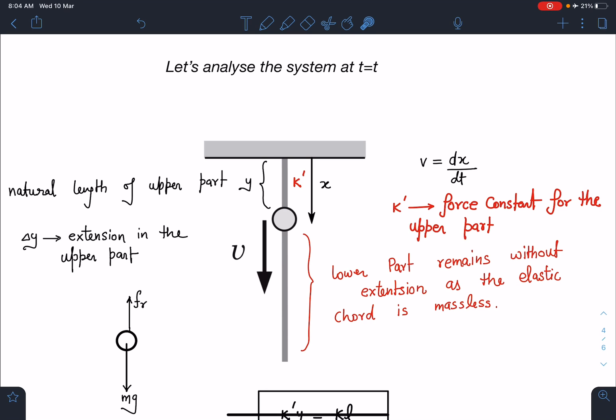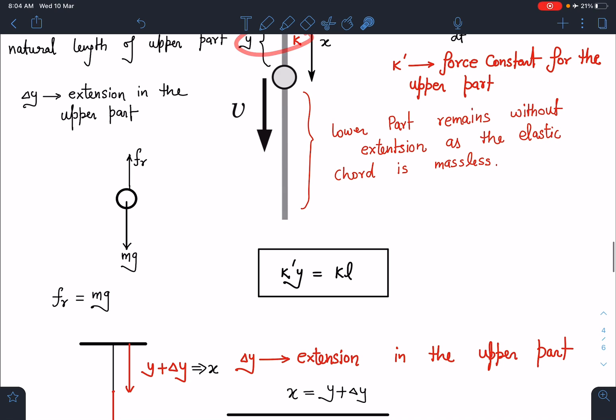If its force constant I'm taking as k dash, I can write k dash times natural length equals k total times total length. This is our equation number one. This friction is also mg because the bead is moving with constant velocity.